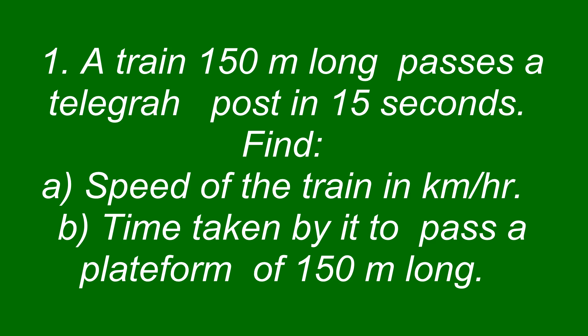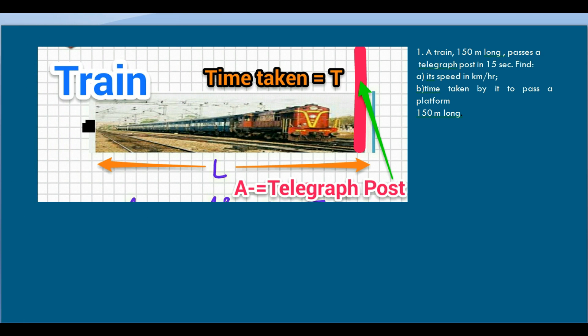Problem one: A train 150 meters long passes a telegraph post in 15 seconds. Find, first, its speed in kilometers per hour, and second, the time taken by it to pass a platform 150 meters long. Here we need to calculate the speed of the train and the time taken when this train crosses the 150-meter platform.